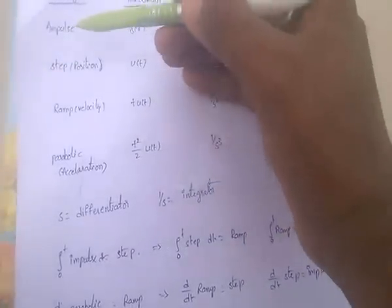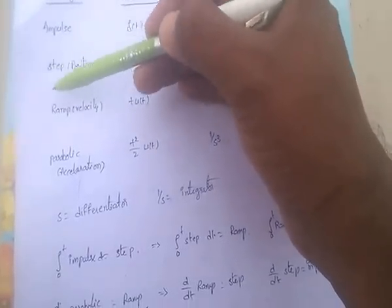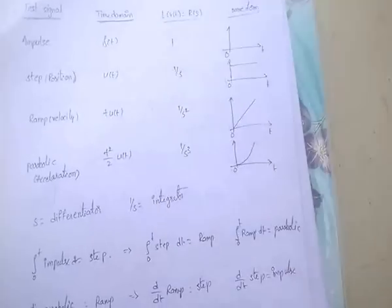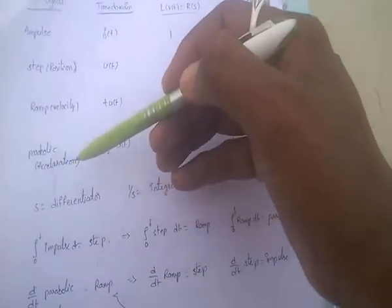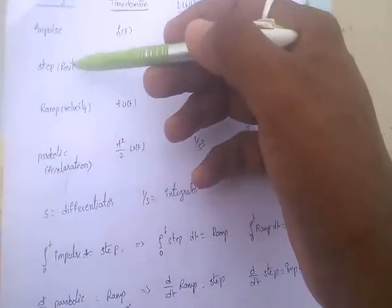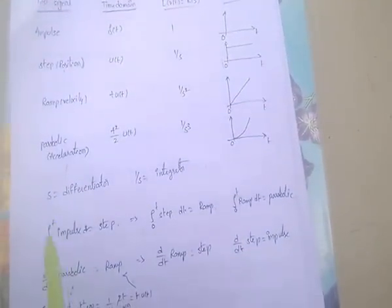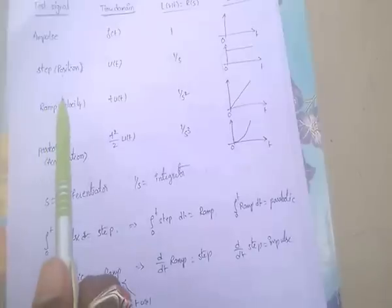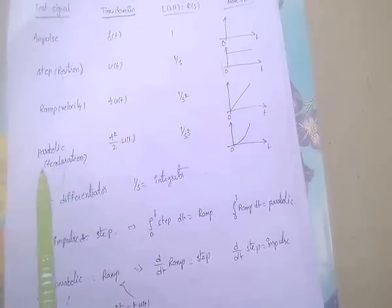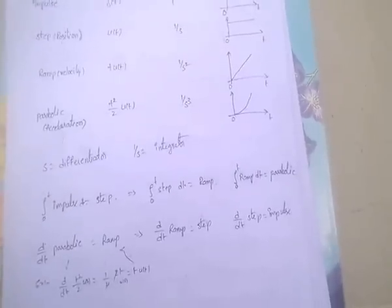By integrating the impulse signal we can get the step signal. By integrating the step signal we can get the ramp signal. By integrating the ramp signal we can get the parabolic signal. Conversely, by differentiating the parabolic we get ramp, differentiating ramp gives step, and differentiating step gives the impulse signal.